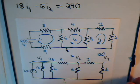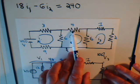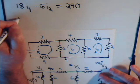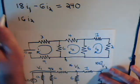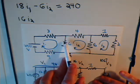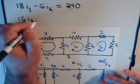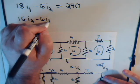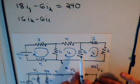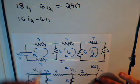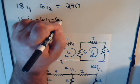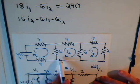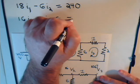For mesh current I2, we have 6 plus 10, which is 16, times I2. For the shared resistors, we have minus 6 times I1 and minus 6 times I3. There is no voltage source present in this loop, so the equation equals zero. That's our second mesh current equation.